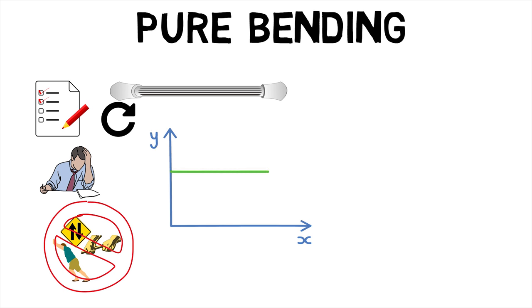Pure bending occurs only under a constant bending moment M since the shear force V which is equal to the first derivative of constant bending moment M with respect to distance x has to be equal to zero.